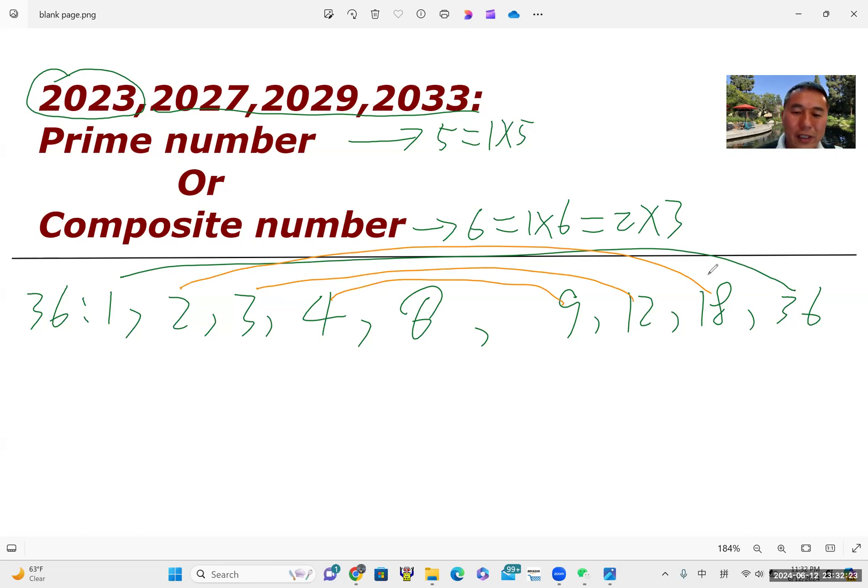So from here, we can say, for each pair, except six, the two factor, either one is smaller than six, smaller than another is greater than six, right? So what is six? Six square is 36. Anyway, from here, we get some idea.